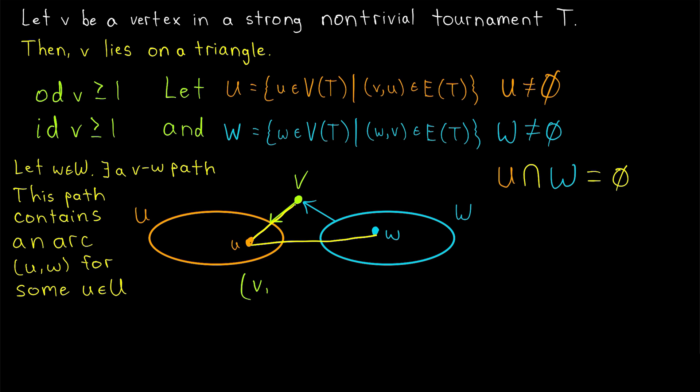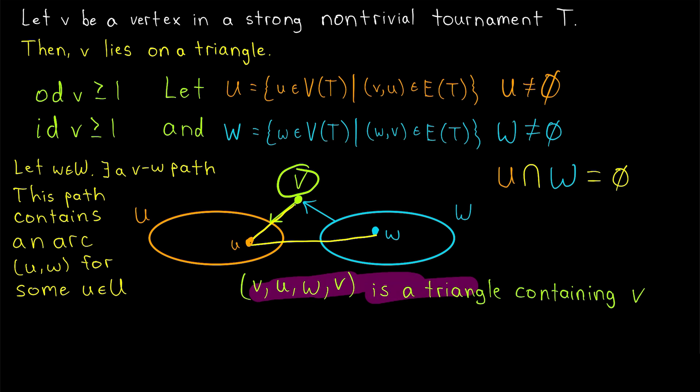All we have to do is start at v. Then, since by definition, v is adjacent to every vertex in the set U, we know that v is adjacent to this vertex u that's on that arc we just pointed out. So we can go from v to u, and then, of course, u is adjacent to our vertex w. But by definition, every vertex in the set W is adjacent to v. So from w, we can finish the triangle by going back to v. And there is our triangle, or three-cycle, containing v.